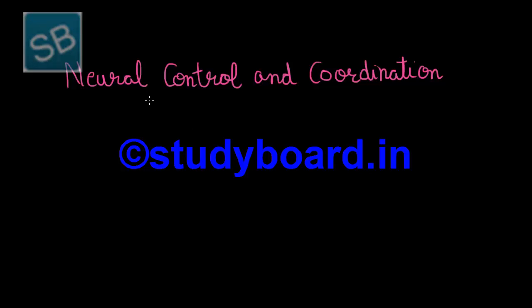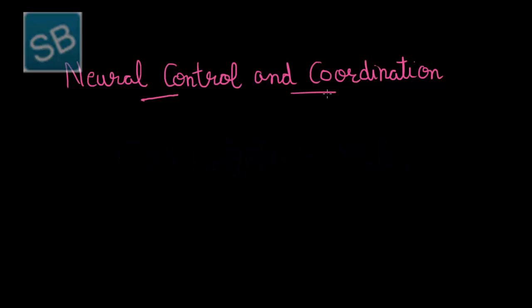Today we will start with the first unit, that is neural control and coordination. Now in general terms, the coordination term means to help each other in a mutual aspect. Thus in humans, coordination is a process